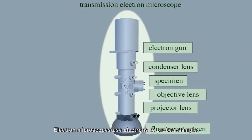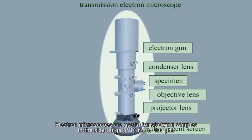Electron microscopes use electrons to probe a sample. Electron microscopes are useful for studying samples in the size range of 10 nanometers to 100 micrometers.